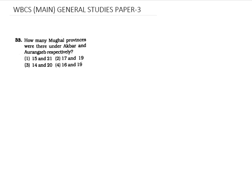Hello, today we are going to solve one question from WBCS Main General Studies Paper 3. The question is: how many Mughal provinces were there under Akbar and Aurangzeb respectively — whether it is 15 and 21, 17 and 19, 14 and 20, or 16 and 19?